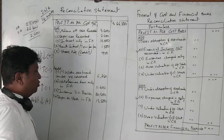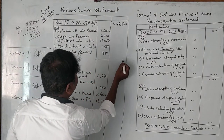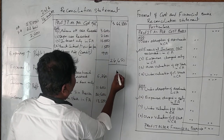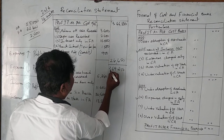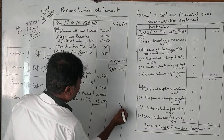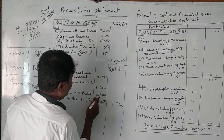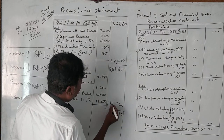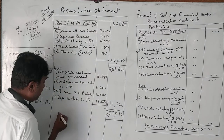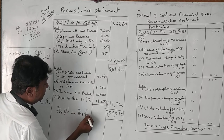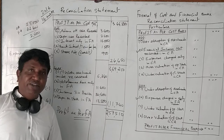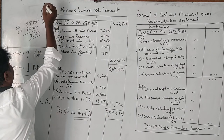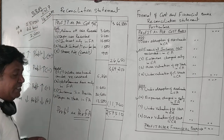We have around nine items in total to add or deduct. Adding all the relevant items and deducting the applicable ones, the final profit as per financial accounts is arrived at. This completes the 14-mark question from the 2017 BBA question paper for Bangalore University — a very simple question.